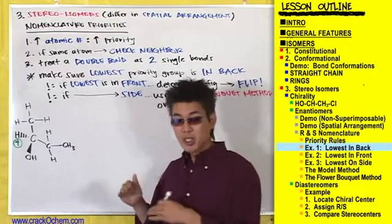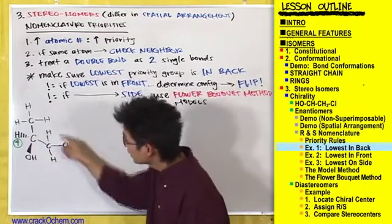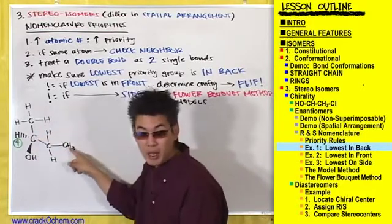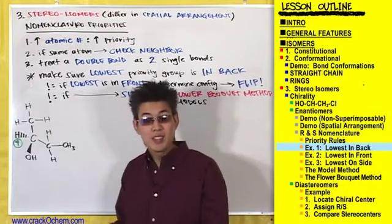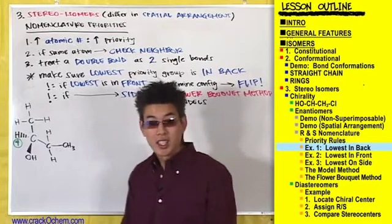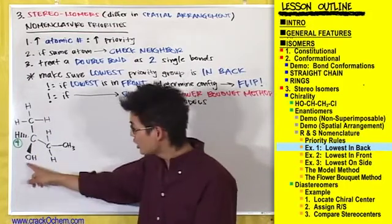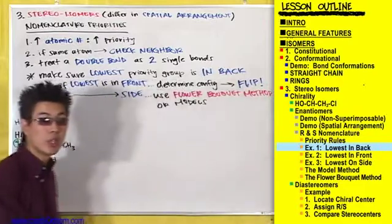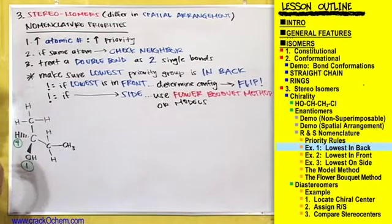Now let's rank the other substituents by comparing them one atom at a time, working from the chiral center outward. Here we have a carbon, an oxygen, and a carbon. Does any atom have a higher atomic number than the others? Yes — oxygen has a higher atomic number than either carbon. So this oxygen group takes priority number one, and we'll draw a circled 1 right next to it.